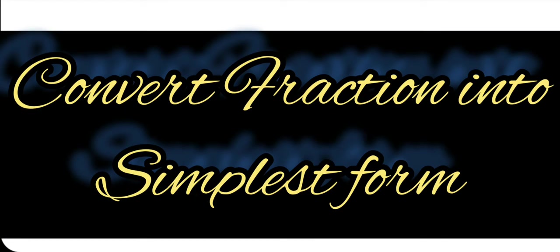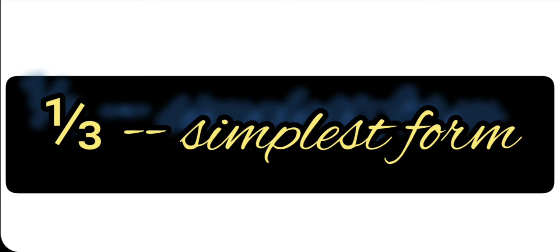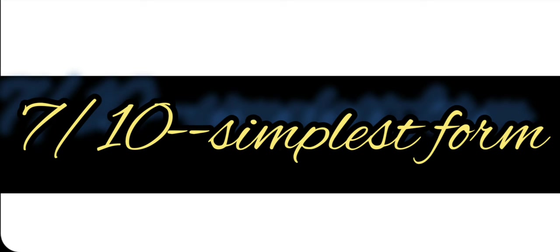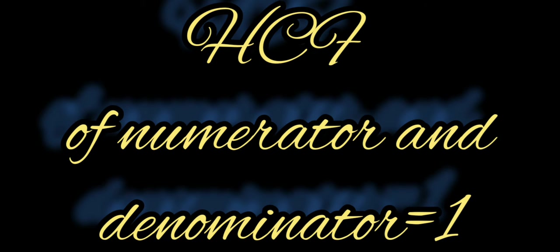How to reduce a fraction into its simplest form. Simplest form means it cannot be reduced further. Suppose 1 upon 3, it cannot be reduced further. And 7 upon 10, it cannot be reduced. Simplest form where I do not have any common factor between numerator and denominator, that will be the simplest form.